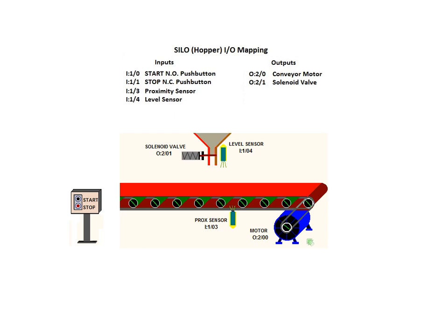The motor used to drive the conveyor in this application is connected to output rack 2, bit 0. Lastly, we have a solenoid valve used to open and close the hopper, which is connected to bit 1 of output rack 2.